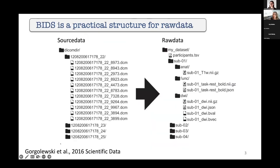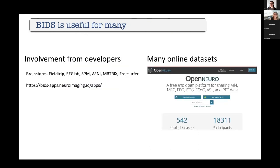BIDS is for raw data — not for DICOM data that come off the scanner, which are considered the source. Raw data is what you work with for your analyses, which in the case of fMRI is a NIfTI file. There was already a large community involved, with developers from Brainstorm, FieldTrip, EEGlab, SPM, AFNI, MRtrix, and FreeSurfer developing different apps to process data.